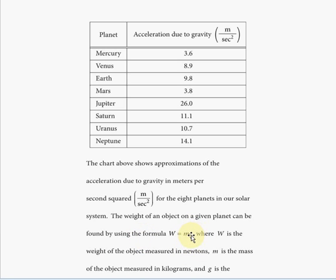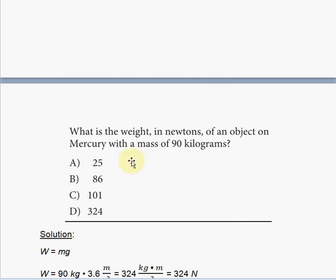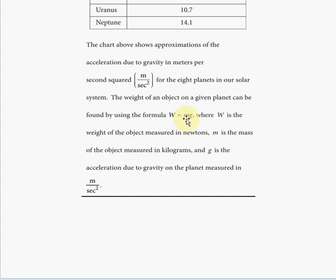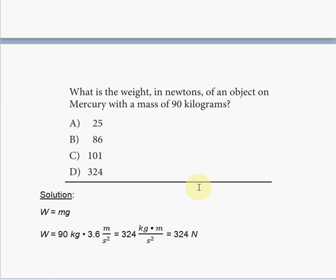Now we know what m means—m is the mass of the object, and g is the acceleration due to gravity. Remember, g will always be the same for a particular planet because it doesn't matter what the object is, the acceleration will be the same. The question asks: what is the weight in newtons of an object on Mercury with a mass of 90 kilograms? We have to set up our equation, W = mg, and fill in the known variables.